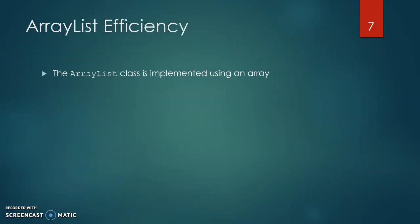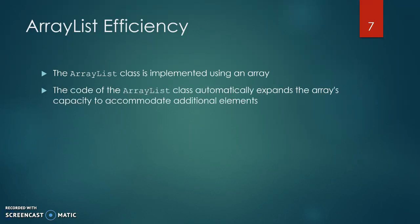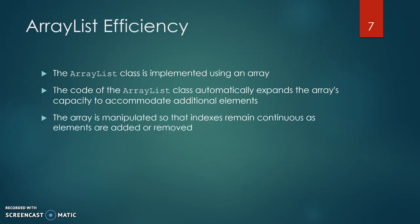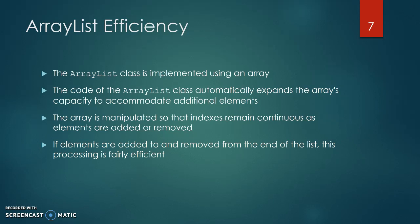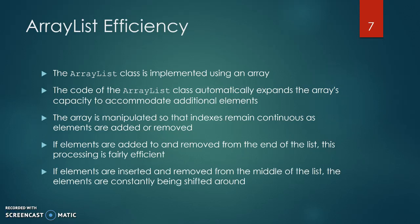ArrayList efficiency. The ArrayList class is implemented using an array. The code of the ArrayList class automatically expands the array's capacity to accommodate additional elements. The array is manipulated so that indexes remain continuous as elements are added or removed. If elements are added to and removed from the end of the list, this processing is fairly efficient. If elements are inserted and removed from the middle of the list, the elements are constantly being shifted around.